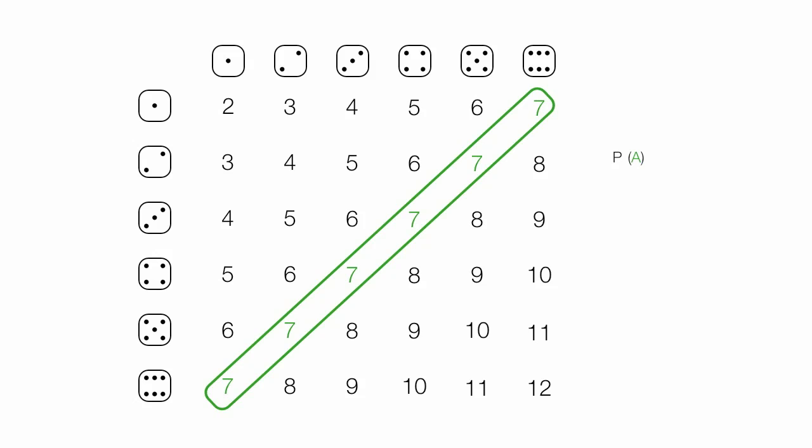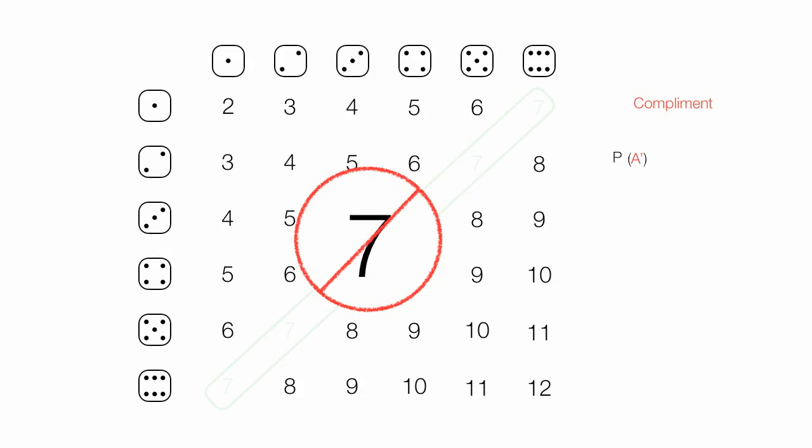Now I have the probability of event A. Now I'm going to talk about the complement. I write the complement with that little hash mark next to the A. That means the complement of event A. In this case, it's anything but a 7, all the red values there.